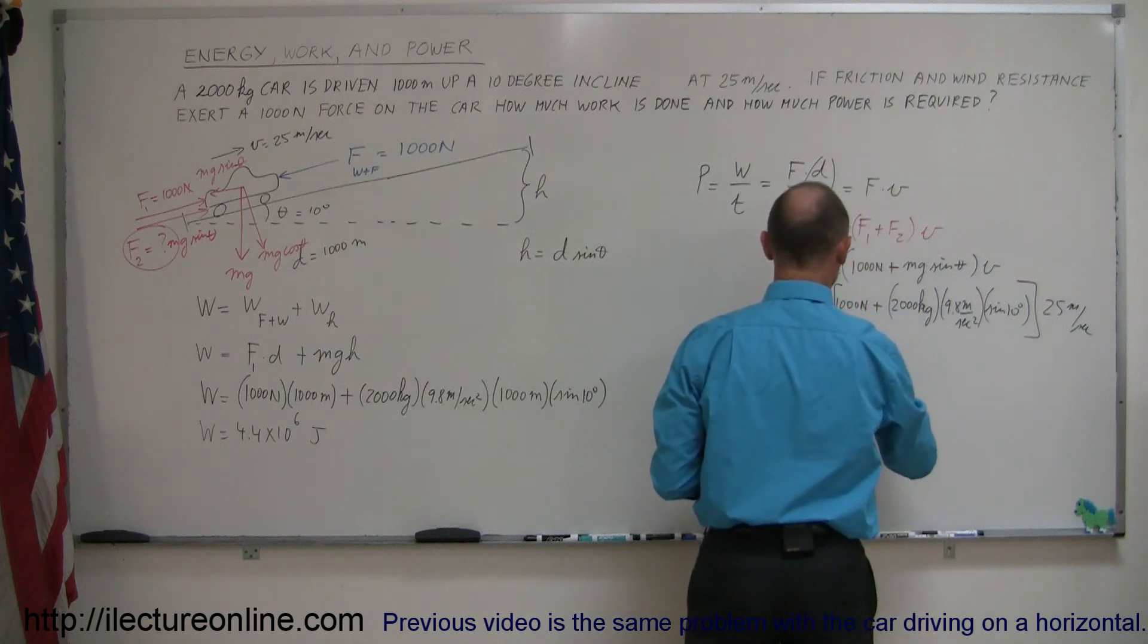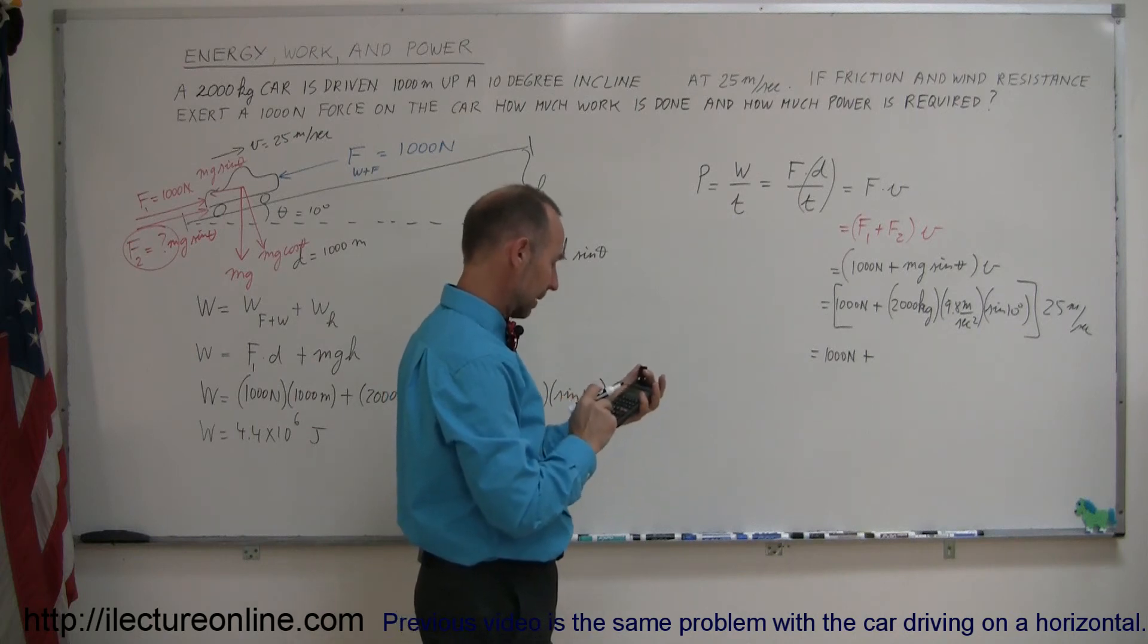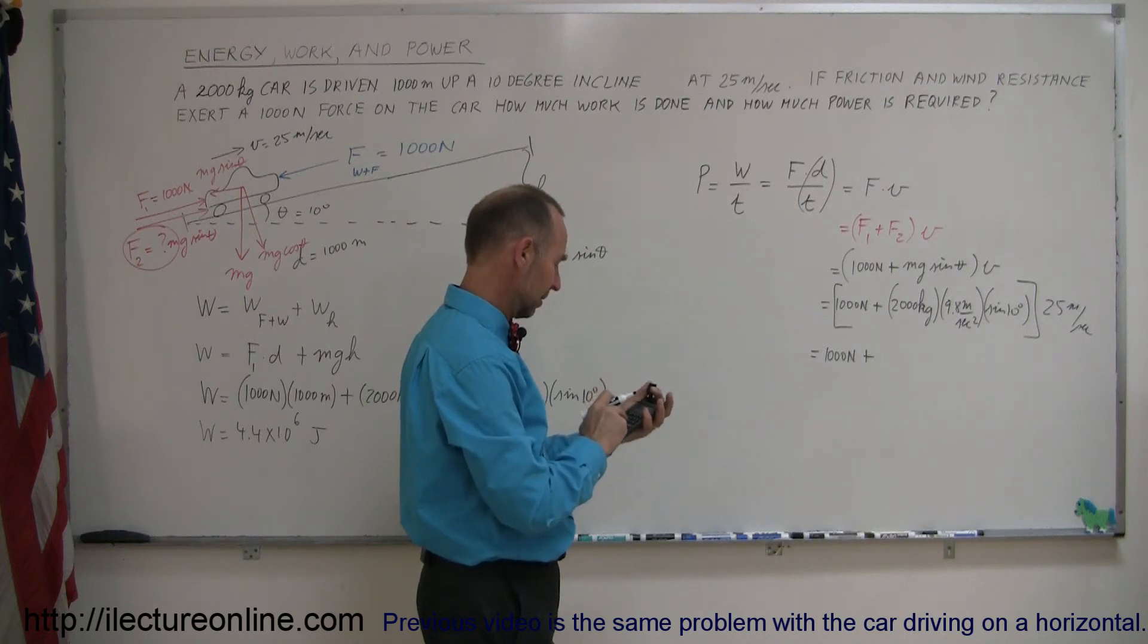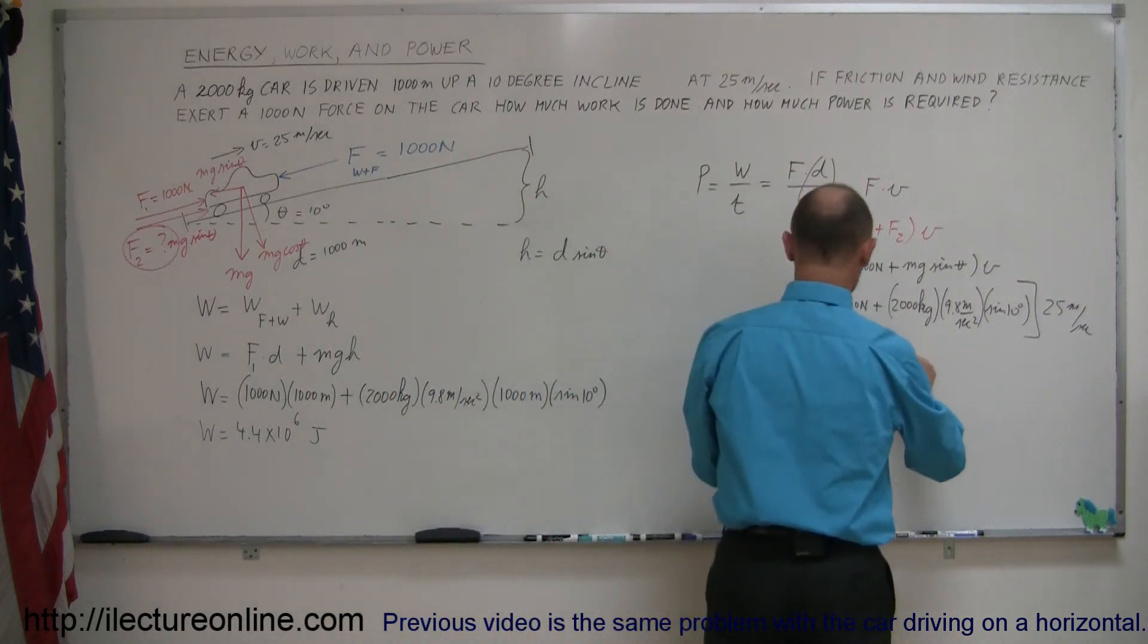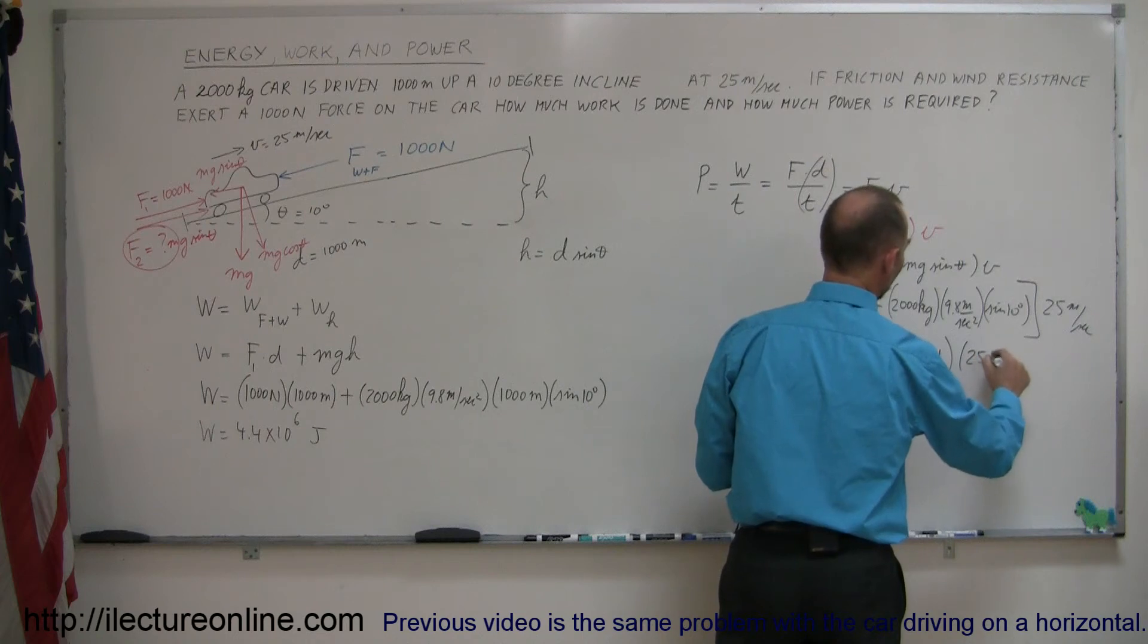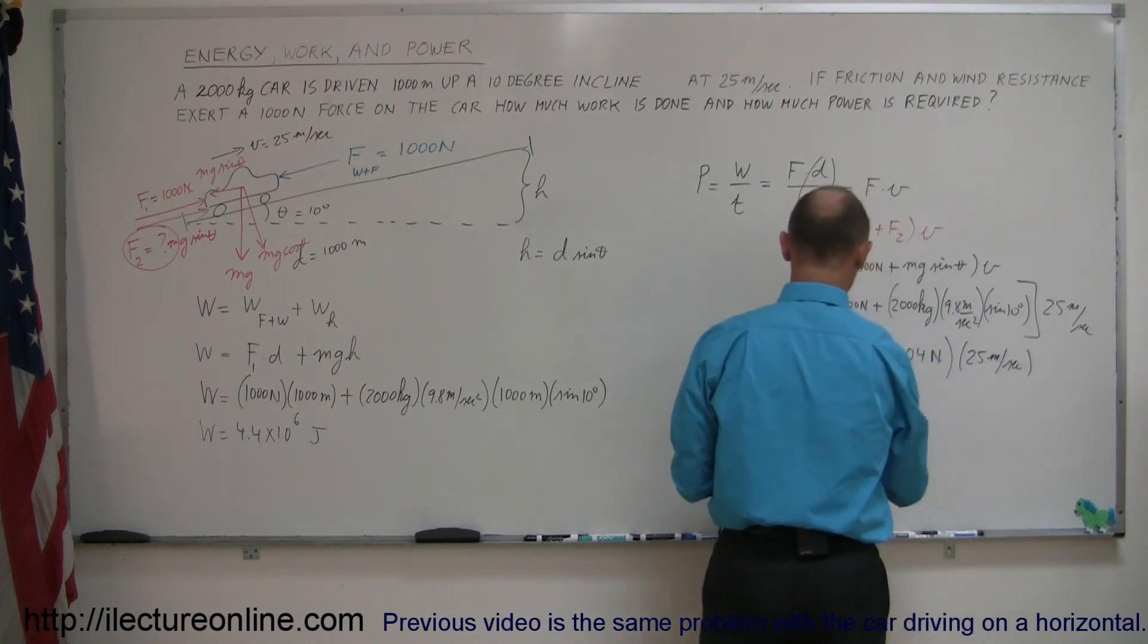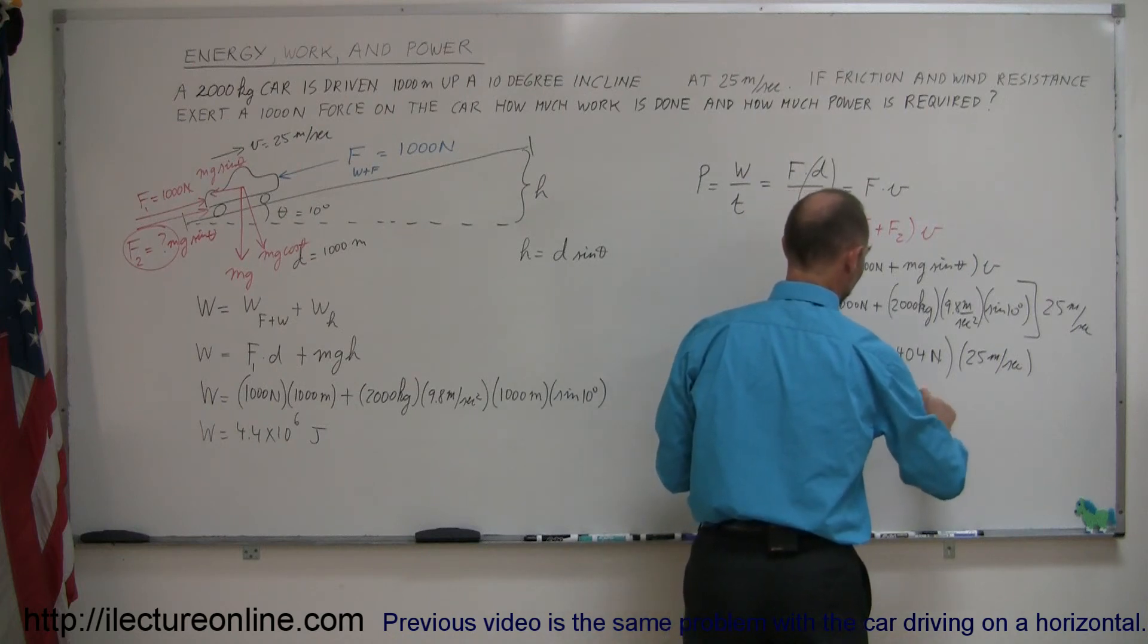Okay, so this is 1,000 newtons plus, here we get 2,000 times 9.8 times the sine of 10. Let me try it again. 2,000 times 9.8 times the sine of 10 equals 3,404 newtons. And multiply that times 25 meters per second. And so, this is equal to 4,404 newtons times 25 meters per second.